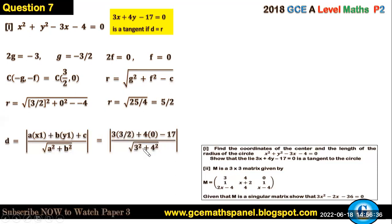This gives us minus 25 over 2 divided by 5, which is equal to the absolute value of minus 5 over 2, which is plus 5 over 2. And this value is equal to the radius, because the radius is equal to 5 over 2 from here.